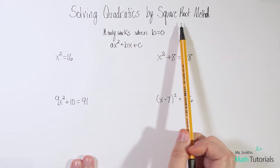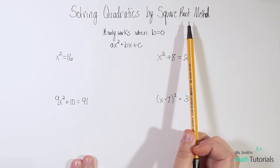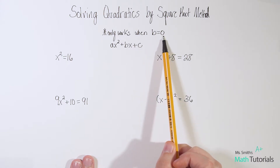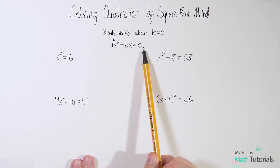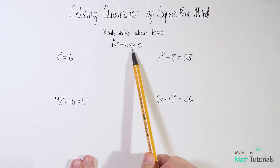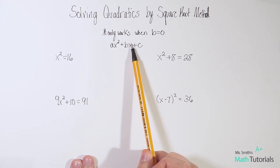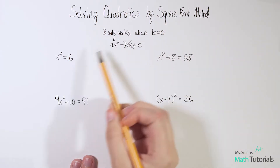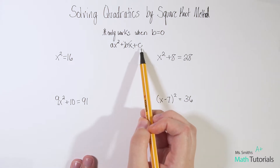Solving by the square root method, I like to think of it as a shortcut to traditional solving. This only works when b equals 0. So if we come back to this trinomial form, if b was 0, then whatever has the coefficient of just the plain x with the power of 1 is kind of like it's not there. This only works when we have our x squared and then possibly a constant.